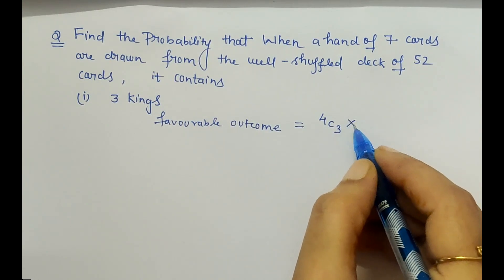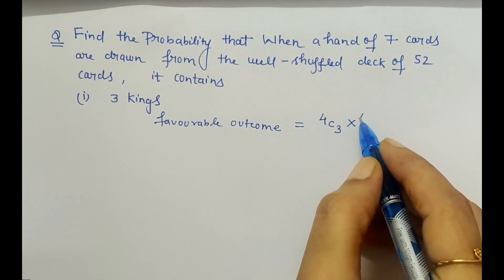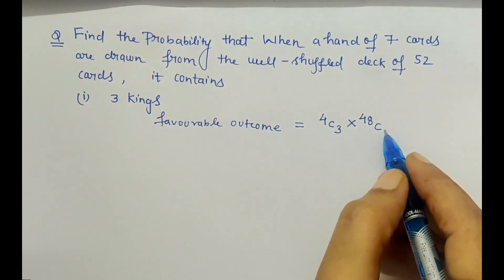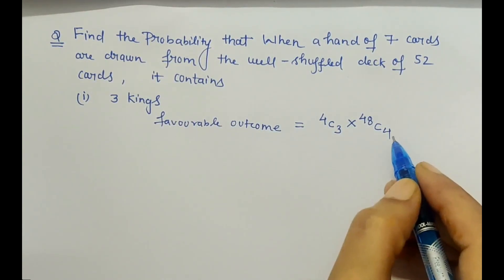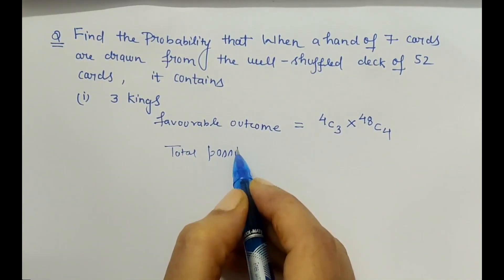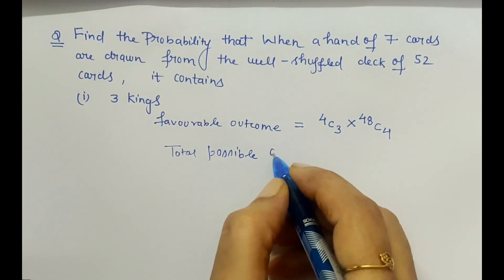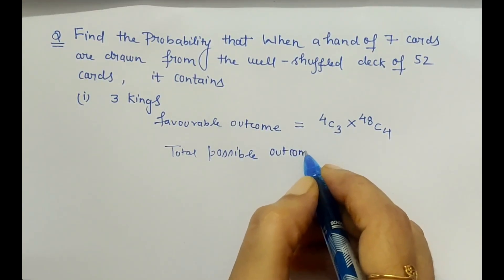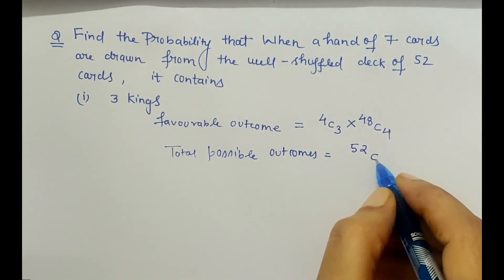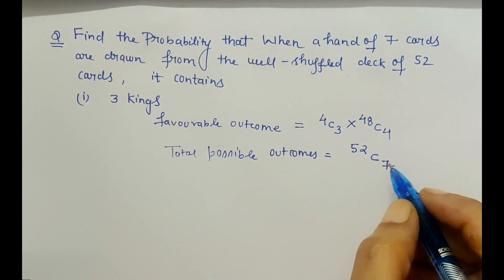So 4C3 into - the remaining cards will be drawn from the leftover 48 cards. Now the total possible outcomes: total cards we have is 52, and out of 52 we have to remove seven cards.